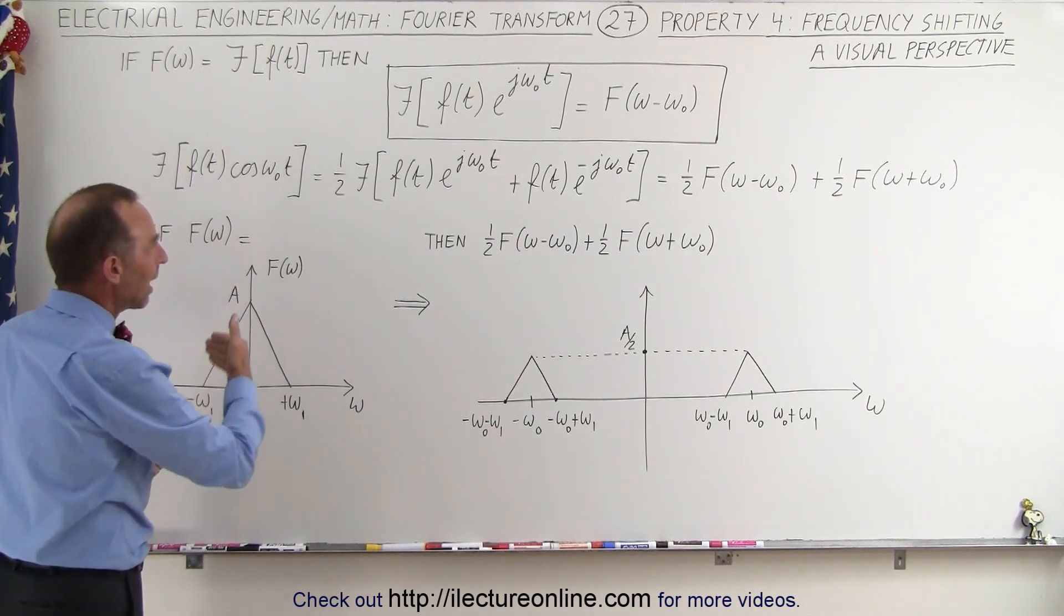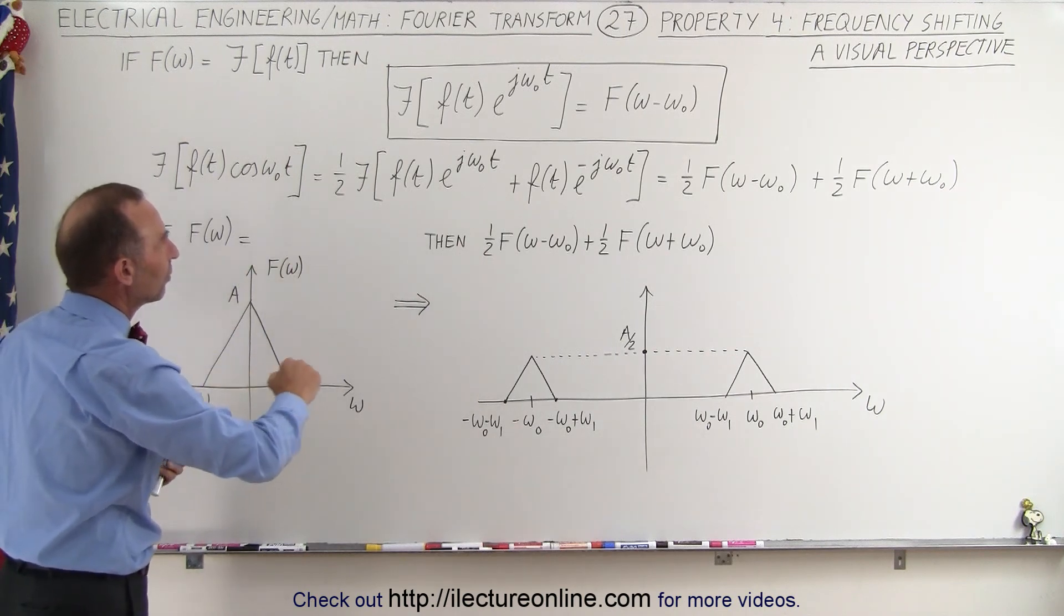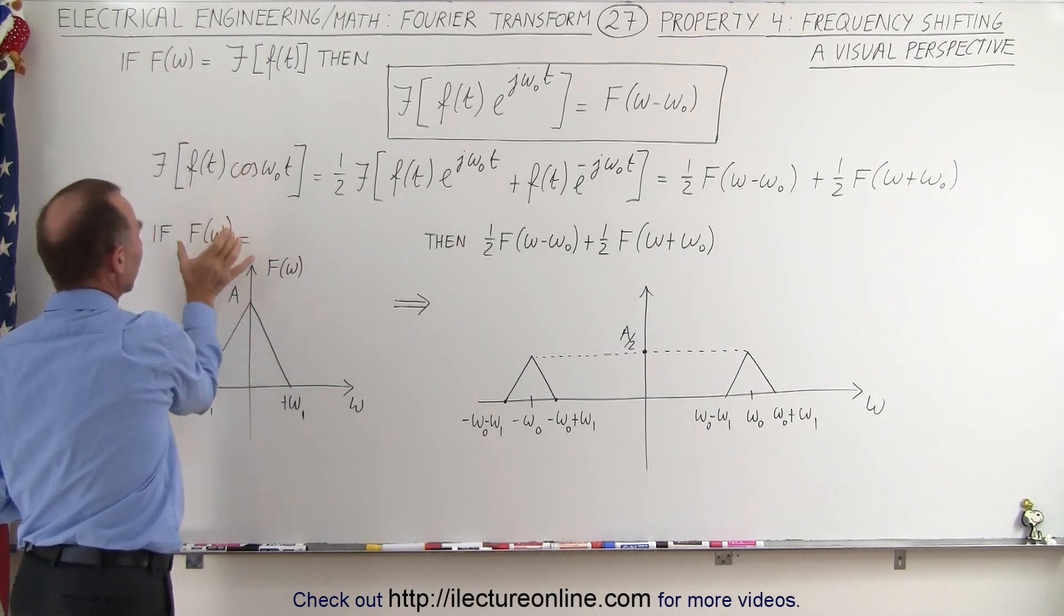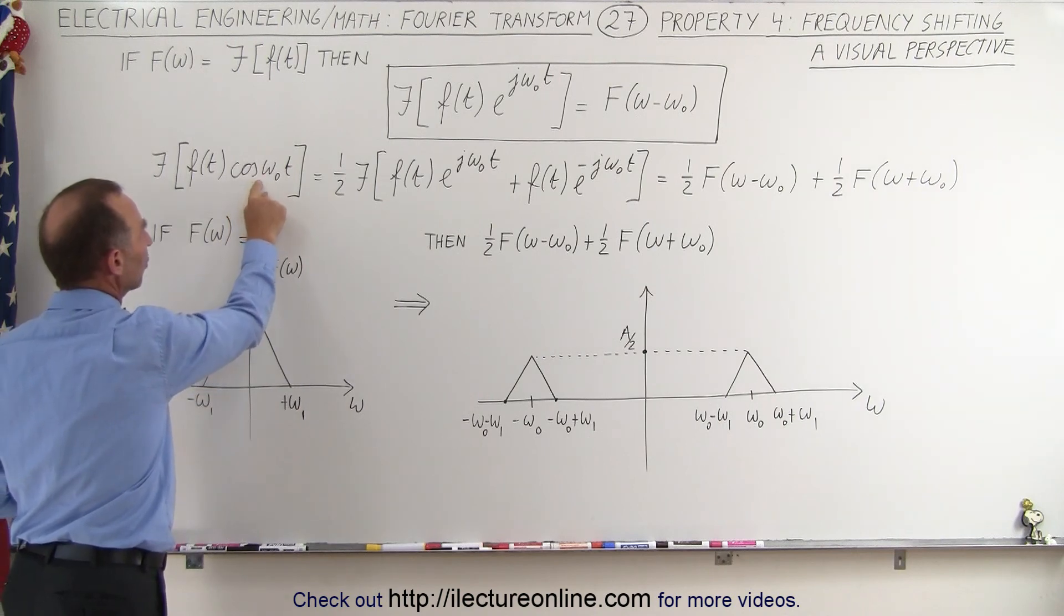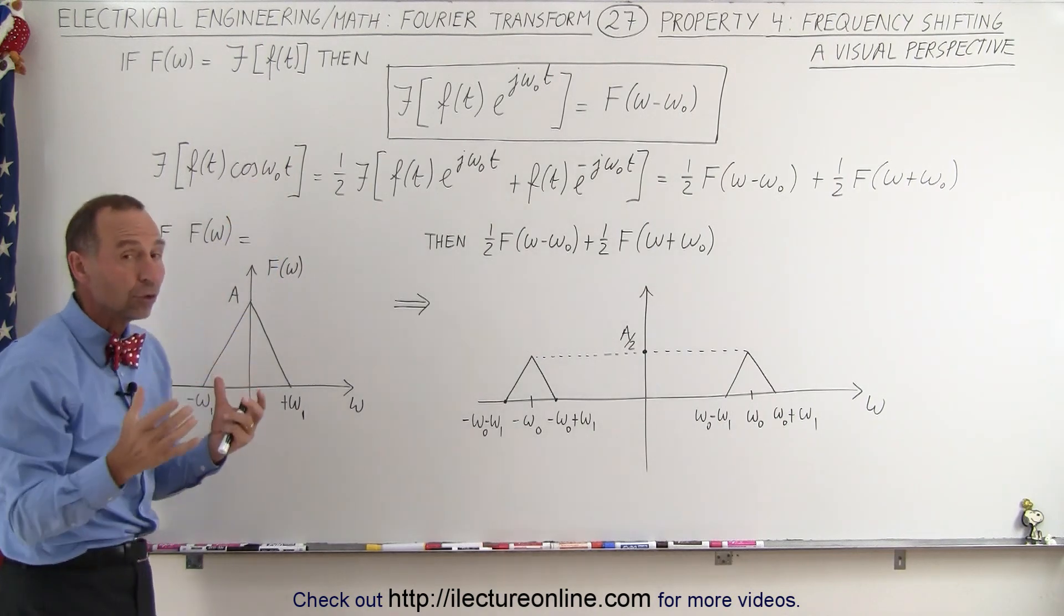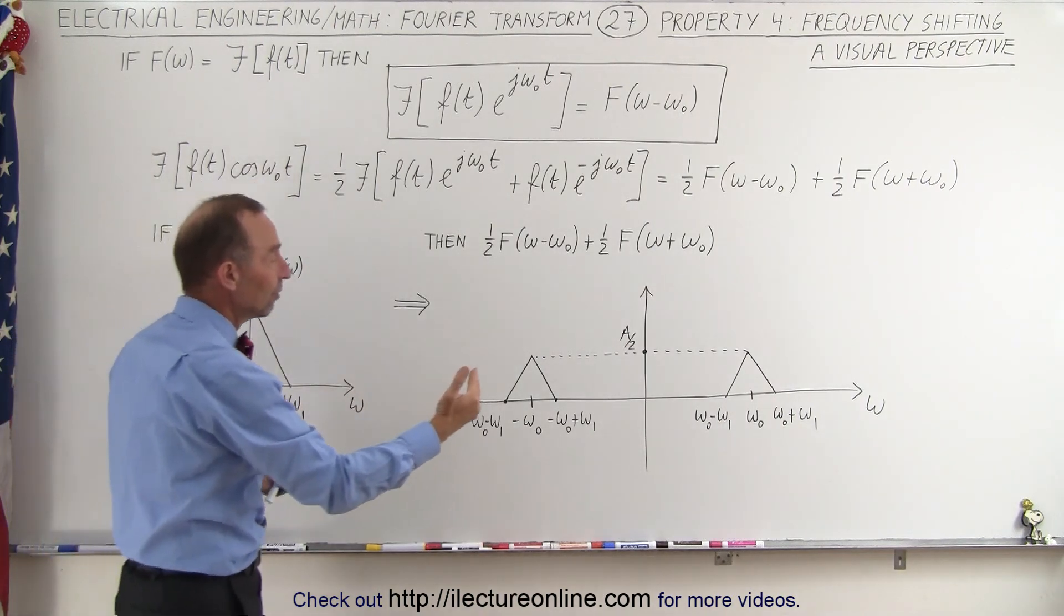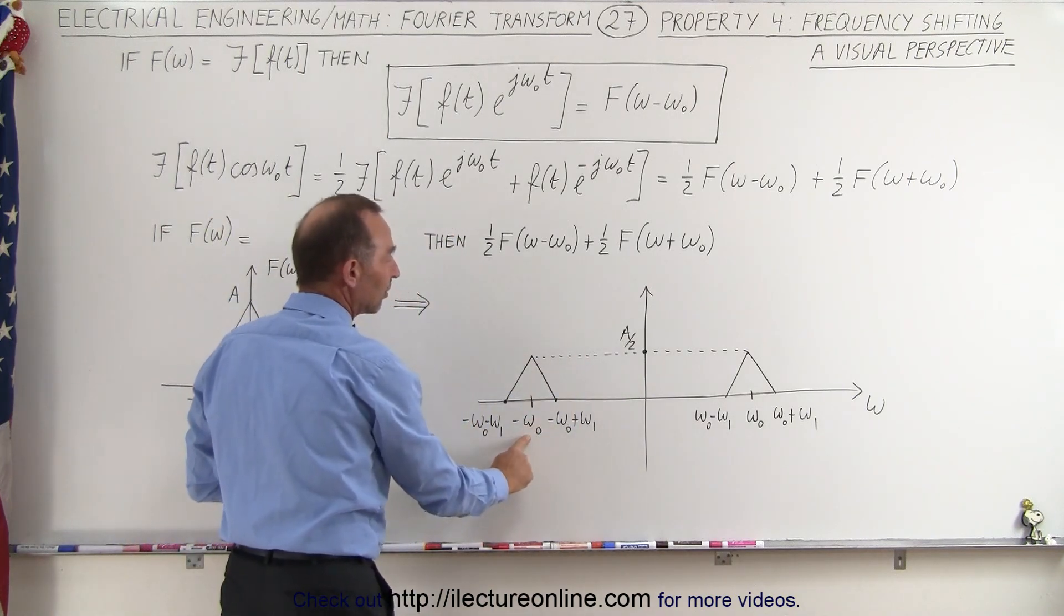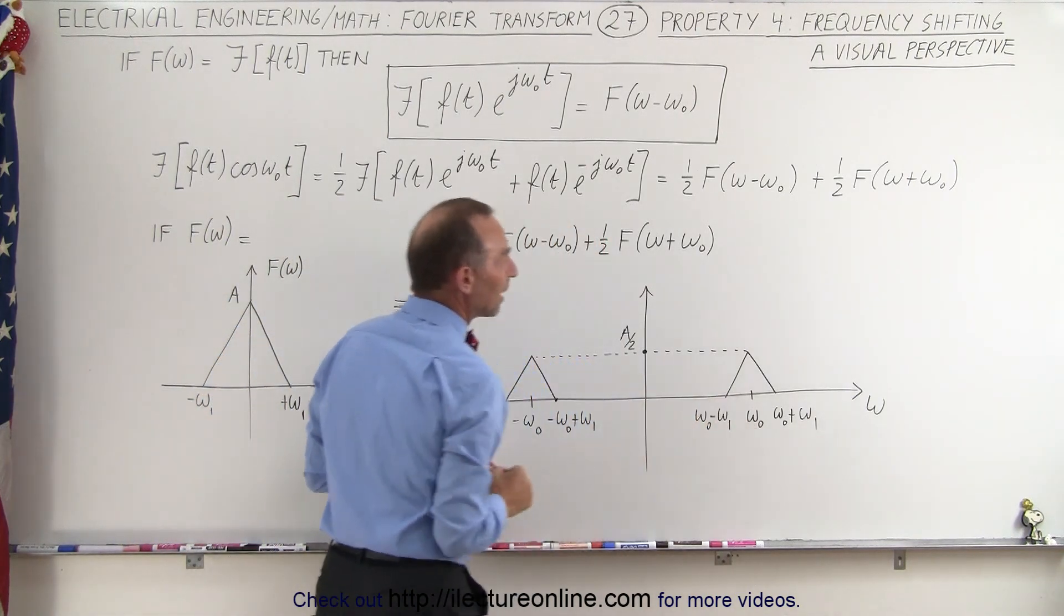And then if we have that shift in the frequency, because we multiply the function that gave you this Fourier transform by the cosine of omega sub not t, notice what happens: we have a shift to the left by omega sub not and a shift to the right by omega sub not.